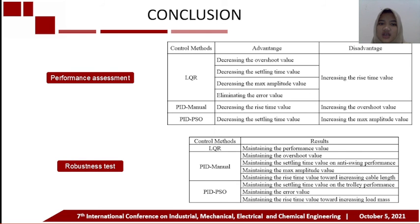Conclusion: The comparison of performance of the three method systems shows that implementing the LQR control system is much more profitable than the PID-Manual and PID-PSO control system because it has many performance advantages except for the slow rise time. In the robustness test, the LQR control system has good value by looking at the value of change performance to the increase in mass and length of the cable compared to the PID-Manual and PID-PSO control system. Meanwhile, the PID-Manual and PID-PSO control system have their respective advantages in maintaining the performance value. For example, the PID-Manual control system has a smaller change in the value of overshoot, max amplitude, and settling time on anti-swing performance. As for value of settling time on the trolley and error, the PID-PSO control system has a smaller change in performance value.